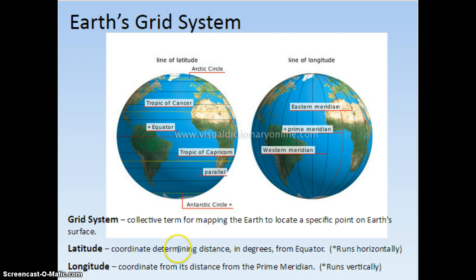Latitude are coordinates that determine distances in degrees from the equator. So the equator is zero degrees, and these run horizontally. You can think of it like a ladder. Longitudes are coordinates from the prime meridian, and these run vertically.